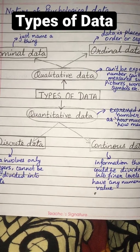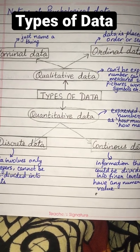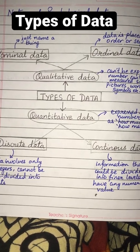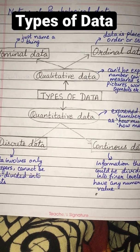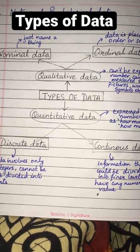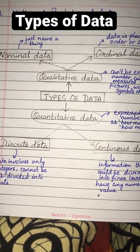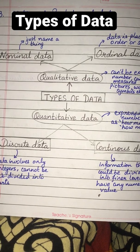Data are of two types: qualitative data and quantitative data. Qualitative data can't be expressed in numbers and cannot be measured, such as pictures, words, and symbols.